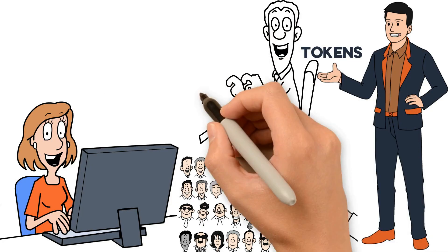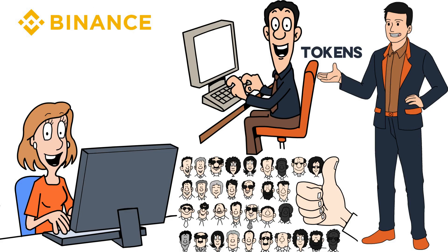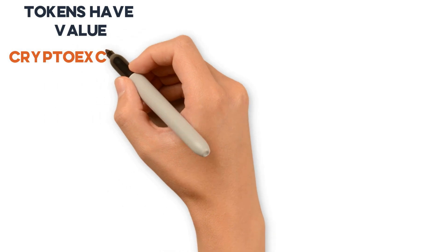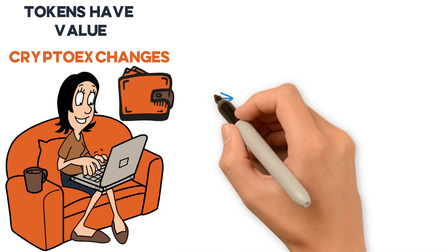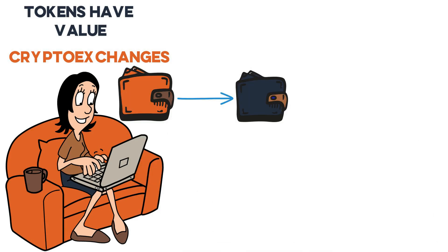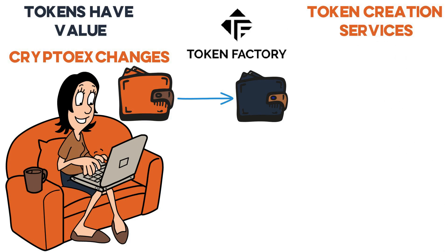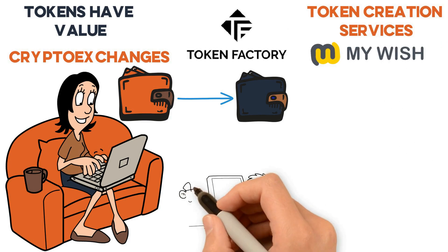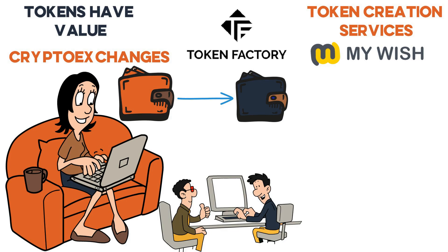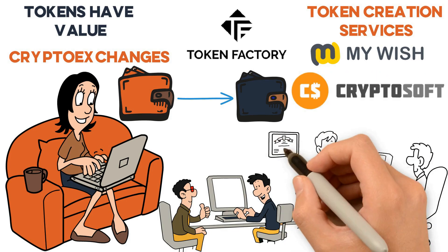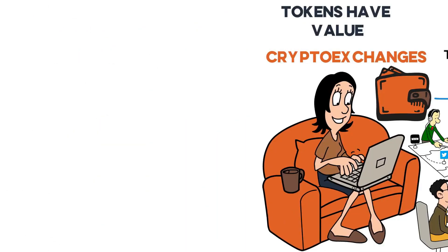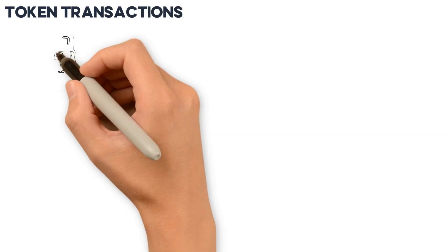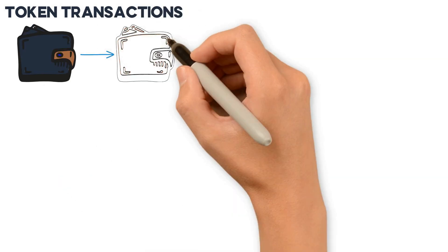Tokens give users access to certain products or services that can be traded online. Most token purchases are made on cryptocurrency exchanges such as Binance and held in digital wallets, just like cryptocurrencies. Tokens have value only on these crypto exchanges, so if you want to use them for their intended purpose — buying discounted products or services — you will have to transfer them from your digital wallet to the platform's digital wallet. Token creation services such as Token Factory and MyWish help anyone create their own tokens without any coding experience. Some companies provide ICO consultancy by helping clients market their ICO and choose the right type of token depending on how they plan to use it.